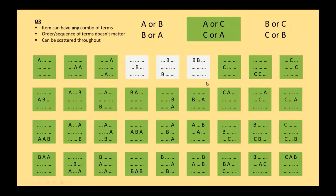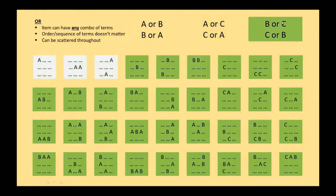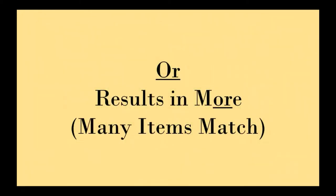The only ones that don't match are the ones that don't contain either A or C. And similarly with B or C, we have all of these items that match because they either contain a B or a C. The order doesn't matter; where they are in the document doesn't matter — it can be scattered anywhere throughout. So when we use OR, it results in more — a lot of items are returned, so many items end up matching even though we have multiple criteria.